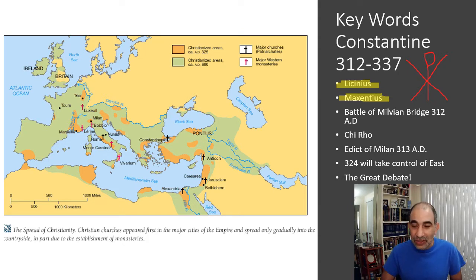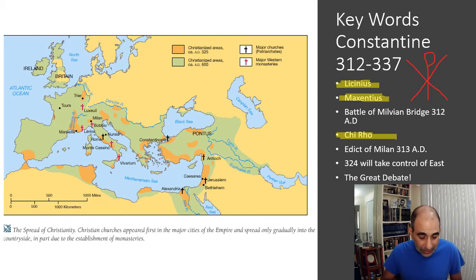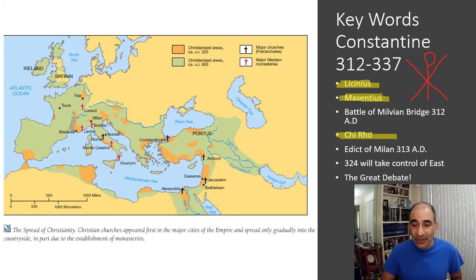What happens right before the Battle of Milvian Bridge is even more important than the battle itself. According to accounts, Constantine had some sort of vision or dream in which he saw a symbol called the Chi-Rho — the first two letters of the word 'Christ' in the Greek alphabet. Though Constantine was still pagan at this point, he took this Christian symbol and told his men to put it on their shields.